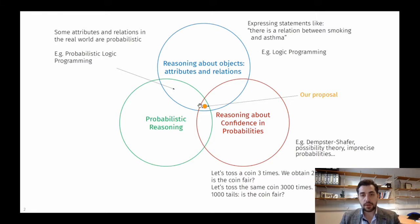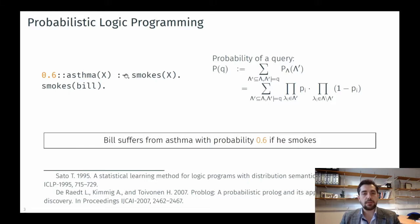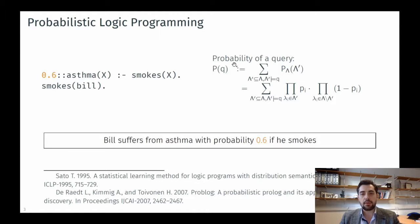Our proposal lies at the intersection of these three areas of research. To illustrate why this is important, we consider probabilistic logic programming. Here is a very simple logic program that says whoever smokes might have asthma with probability 0.6, and Bill smokes. From this we can derive the probability of a query — whether Bill has asthma — as the sum of the probability of the query being true in all possible worlds. We conclude that Bill suffers from asthma with probability 0.6 if he smokes.